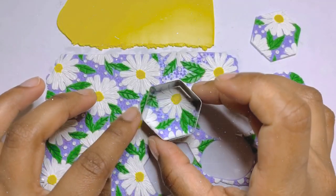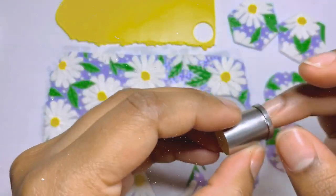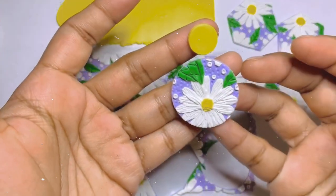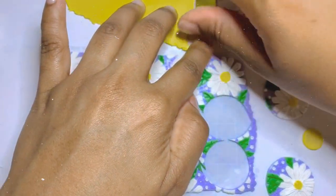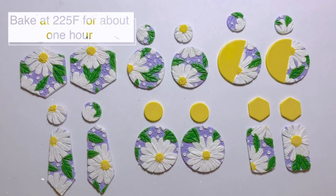Again, since this is a really busy pattern, I am using yellow to cut some of the components off. Then I bake my pieces at 275 Fahrenheit for about 1 hour.